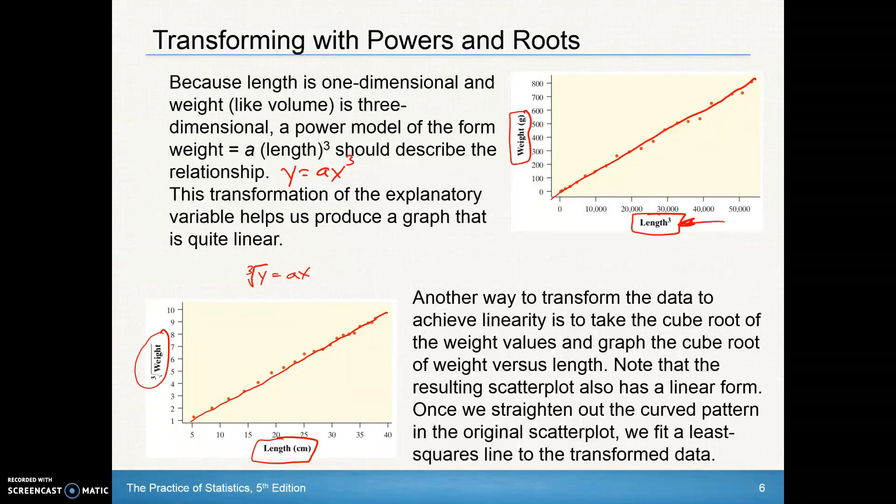And once we straighten out the curve pattern, the original scatter plot, we fit a least squared regression line to that transformed data. But I'm going to suggest that we always, if you know what the power is, if you know what the power is in that relationship, apply it to the X value. And then you can have an equation that's probably more familiar to work with here.